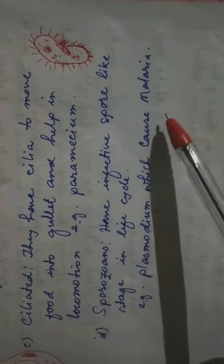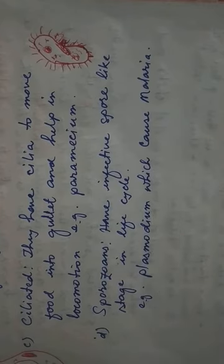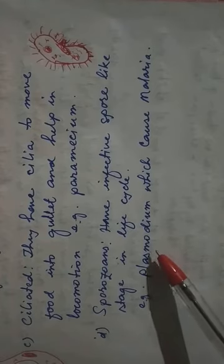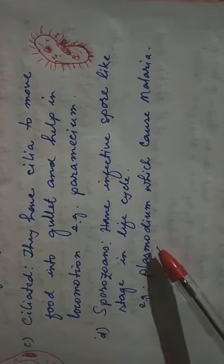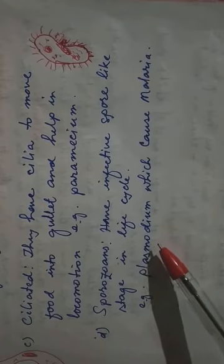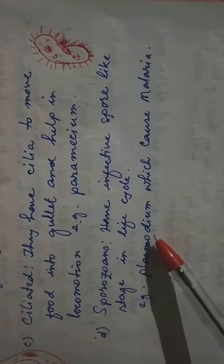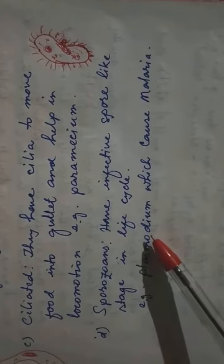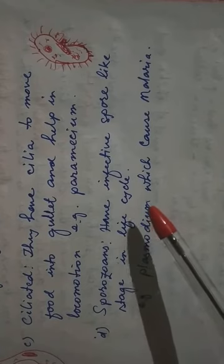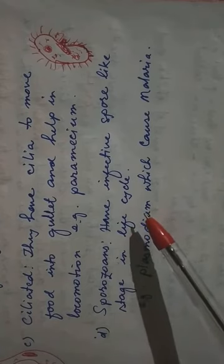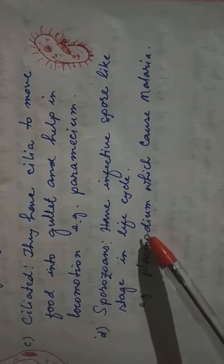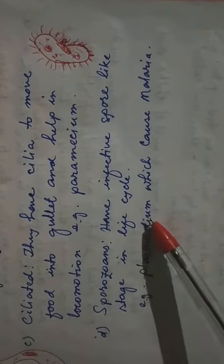Plasmodium causes malaria. We know that malaria is caused by Plasmodium. Different species of Plasmodium are there: Plasmodium vivax, Plasmodium falciparum, Plasmodium malariae. These are spread by the female Anopheles mosquito. Their life cycle is completed in two hosts — one is the human being and another is the female Anopheles.